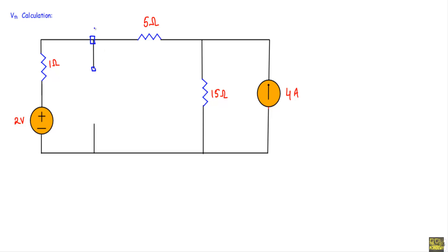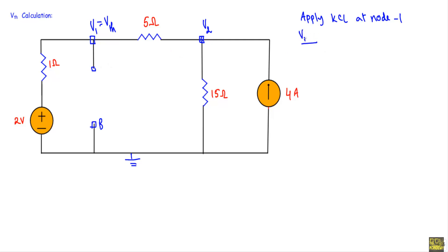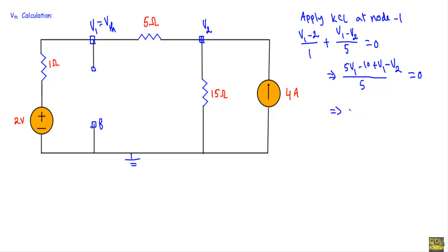This is node A with voltage V1, which equals Vth. Terminal B is the ground terminal, and node 2 has voltage V2. Applying KCL at node 1, with all currents unknown and outgoing: (V1 − 2) / 1 + (V1 − V2) / 5 = 0. Taking LCM: 5V1 − 10 + V1 − V2 = 0, which gives equation 1: 6V1 − V2 = 10.